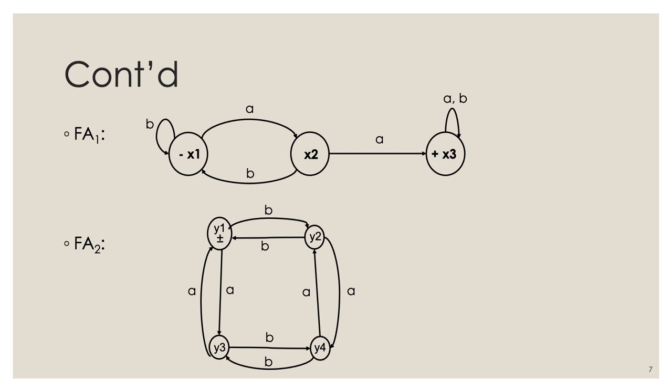FA1 accepts the language of words over alphabet {a, b} that have a double-a somewhere in them. FA2 accepts the language of all words over {a, b} that have an even number of a's and an even number of b's. We will build FA3, the union of these two finite automata, by applying this algorithm. We place ourselves in the start state Z1, which equals X1 or Y1, and determine transitions on reading 'a' and 'b'.